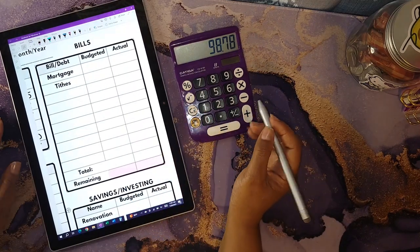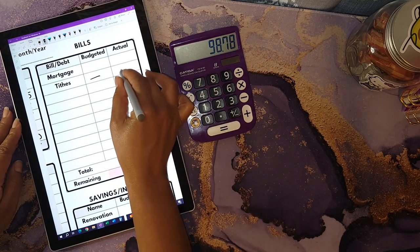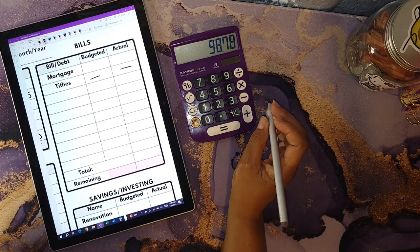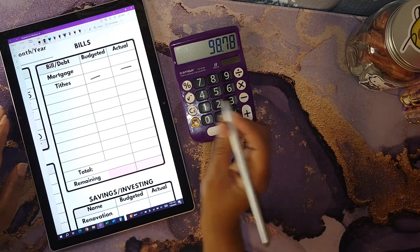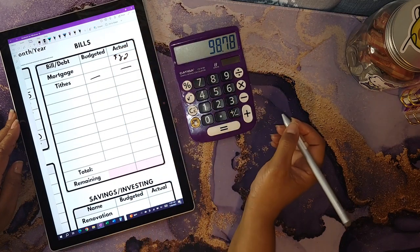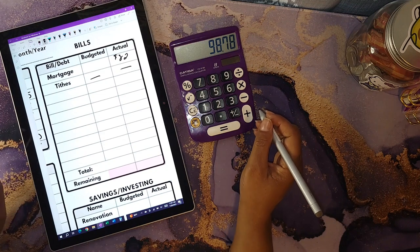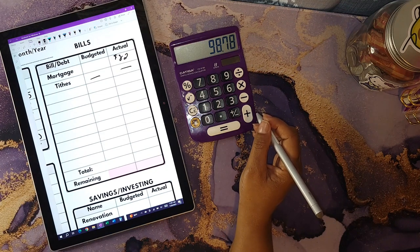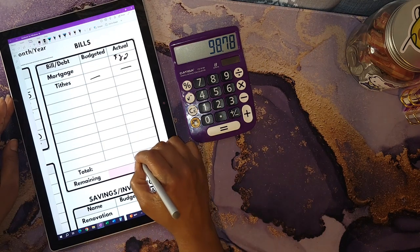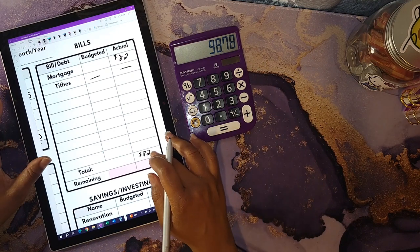The next section is the bills section. I stopped disclosing my tithes, so I will not be sharing that on my channel anymore. But I allocated a total of $82 to go towards my mortgage. A lot of this money came from the different apps that I use. The amount of this section of bills is a total of $82.